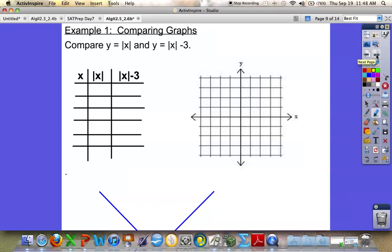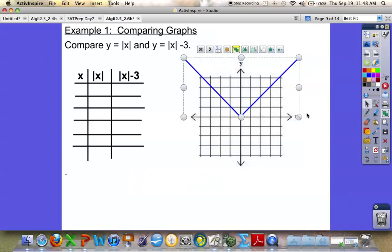So what I'd like you to do now is compare the graph of Y equals the absolute value of X, which you know is the parent function at the origin, with the absolute value of X minus 3. So let's fill in some points here. Let's use negative 2, negative 1, 0, 1, and 2.